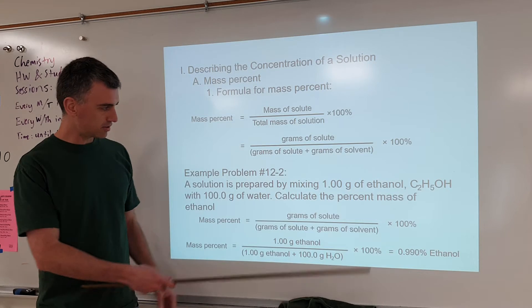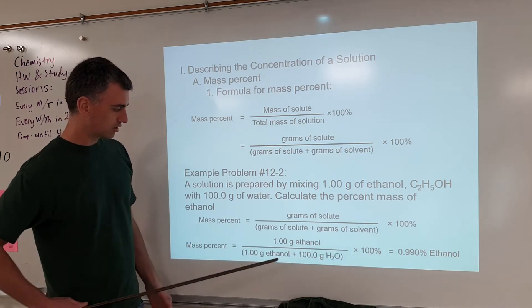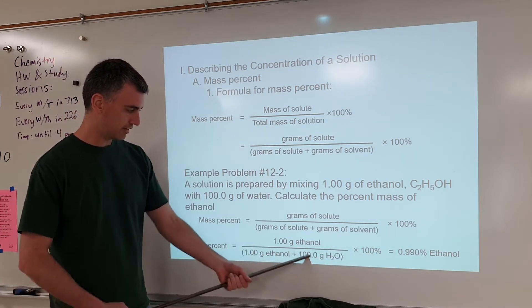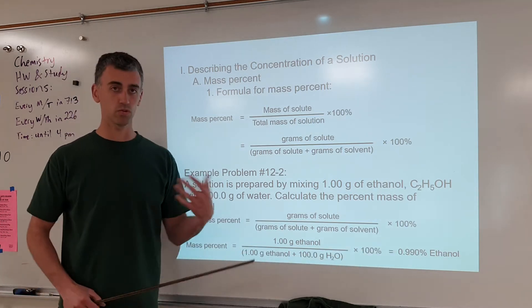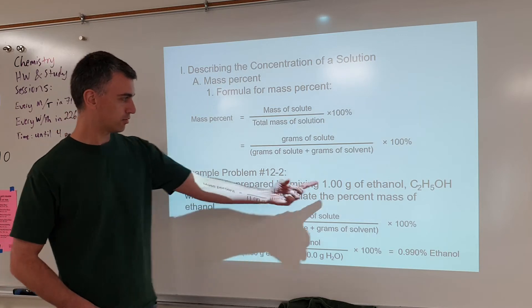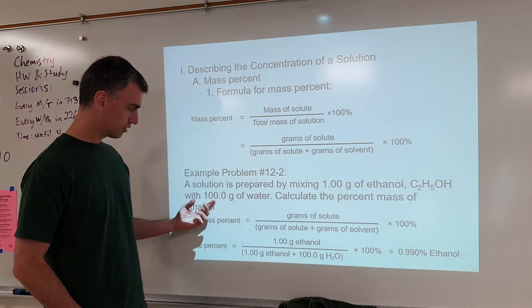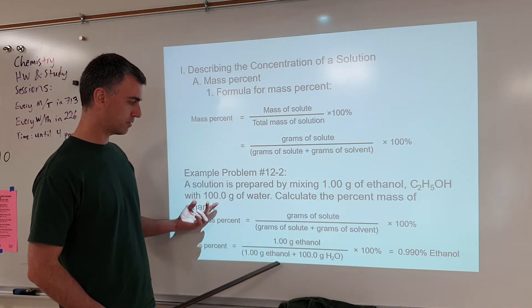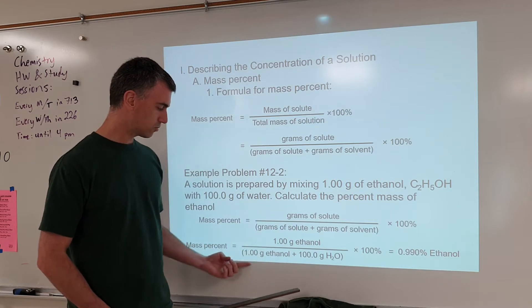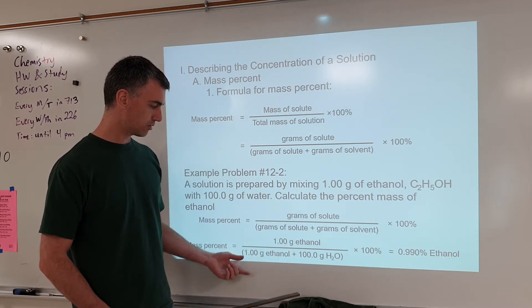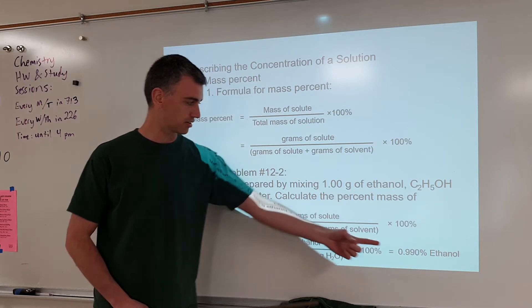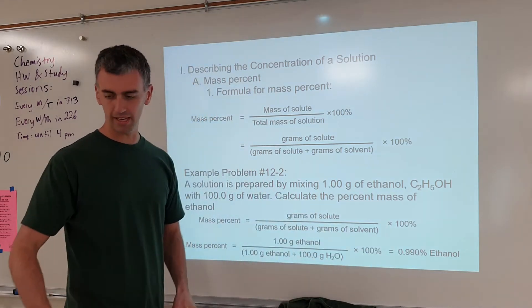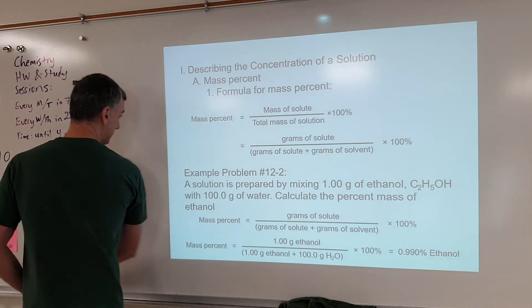So that is why you get this number right here, because 1 divided by 101 from adding these two together times 100% gives that percent. And notice, the same rules for significant figures apply with three sig figs. And true, this is four sig figs, but when you add together, that's 101.0 grams. So it'll be four significant figures. So three sig figs, three sig figs. So anyway, having mentioned that, let's look at the next thing.